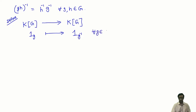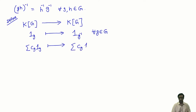Let us define a map ψ from the group ring KG to itself as follows: we take the basis element 1_G to the basis element 1_{G^{-1}}, for all G in G. On a general element, it is defined as a linear combination: ψ(Σ C_G 1_G) = Σ C_G 1_{G^{-1}}. The claim is that this map ψ is an isomorphism between KG and KG^op.